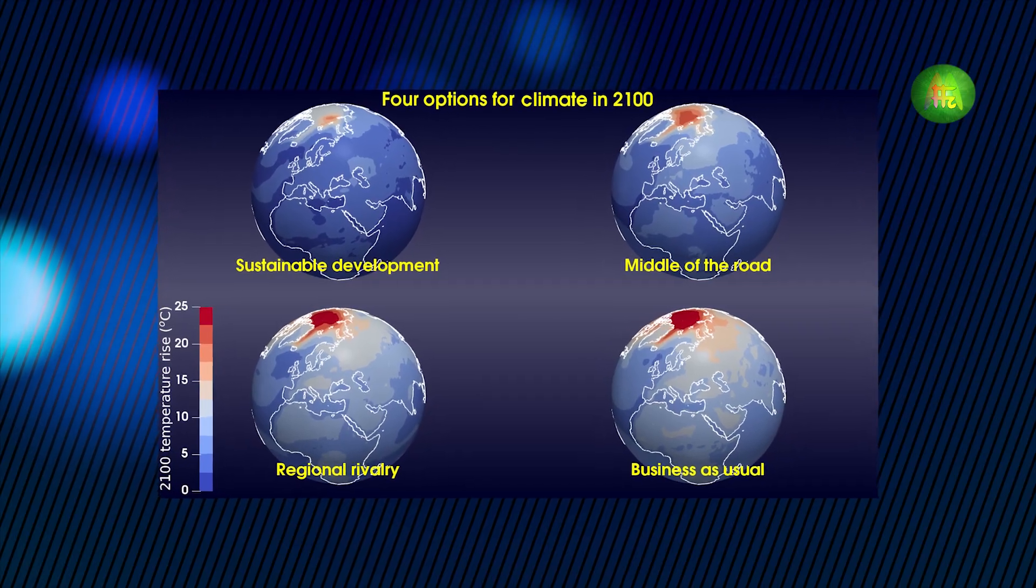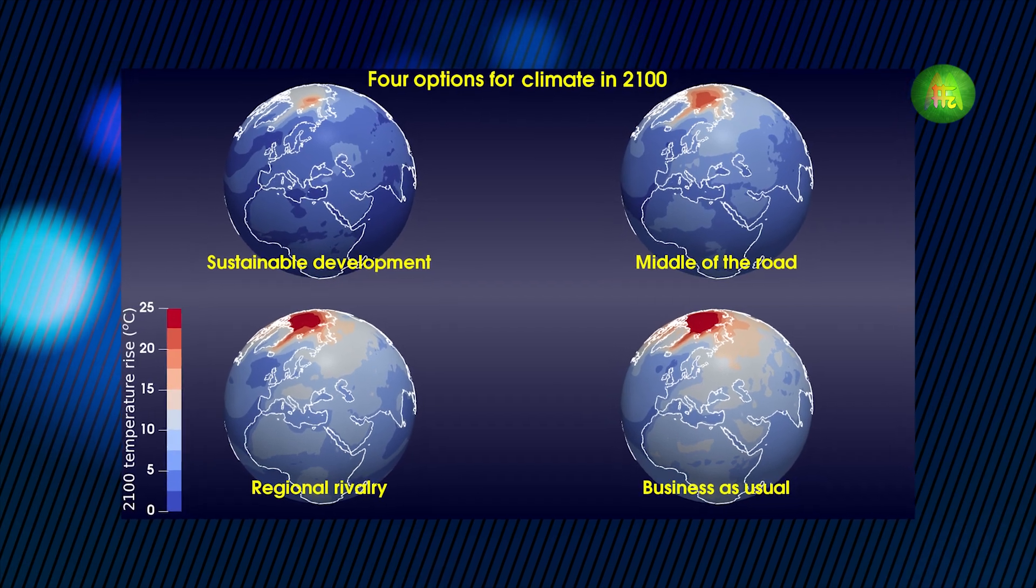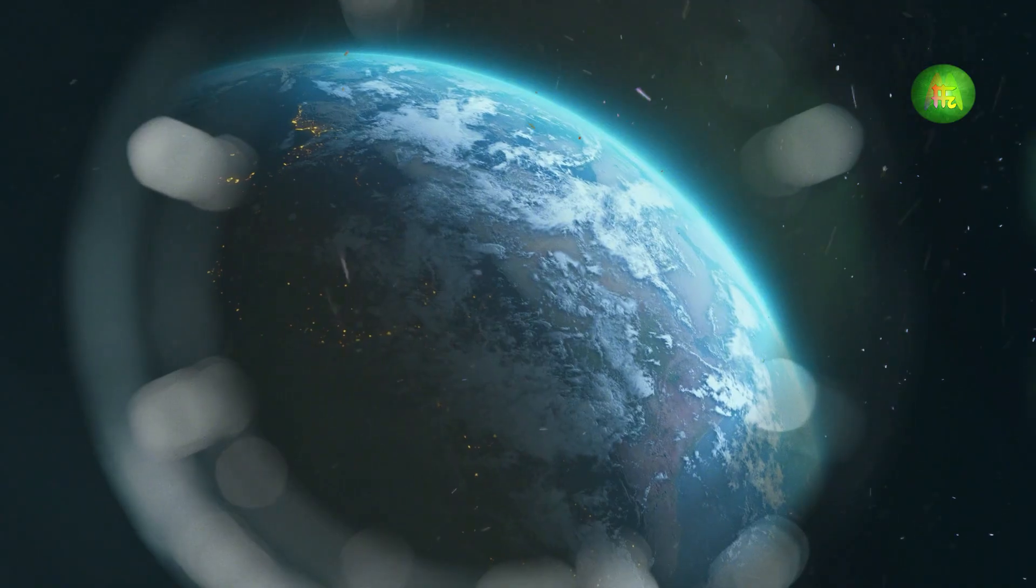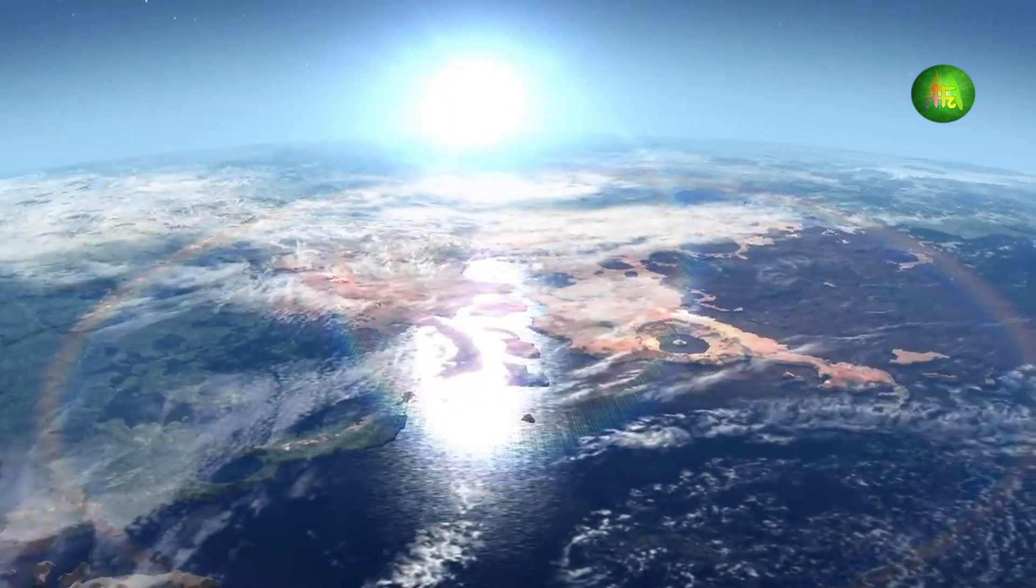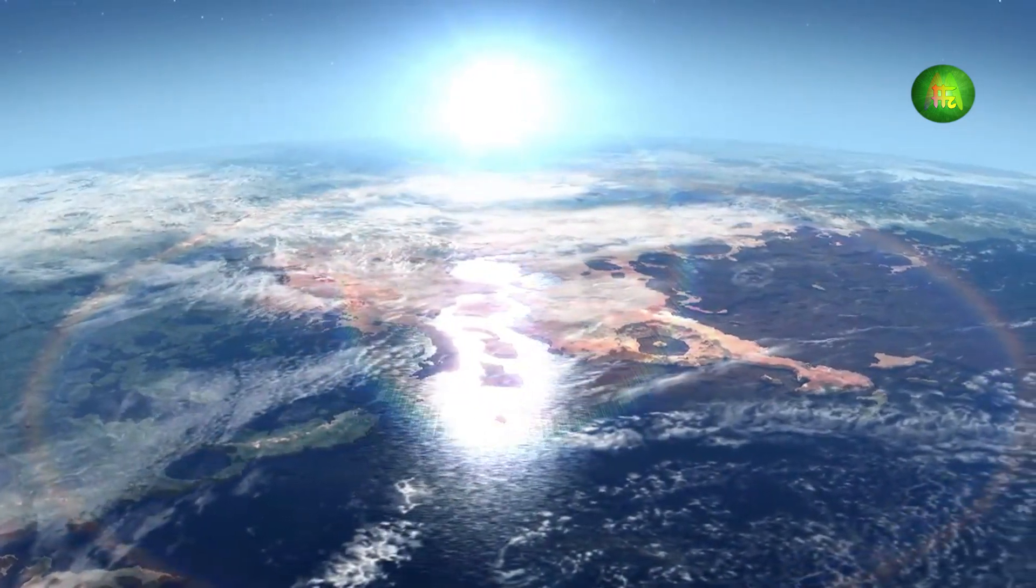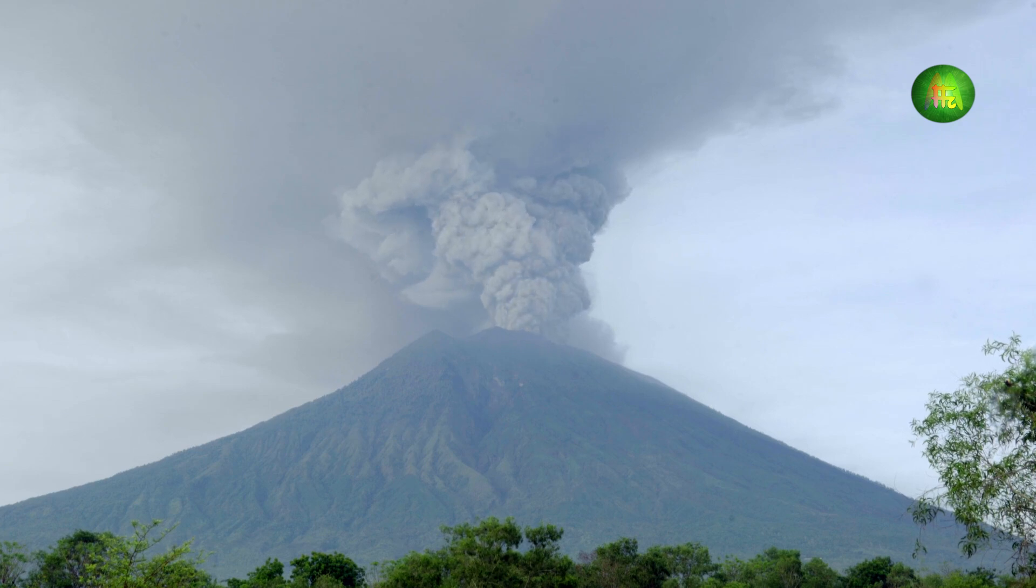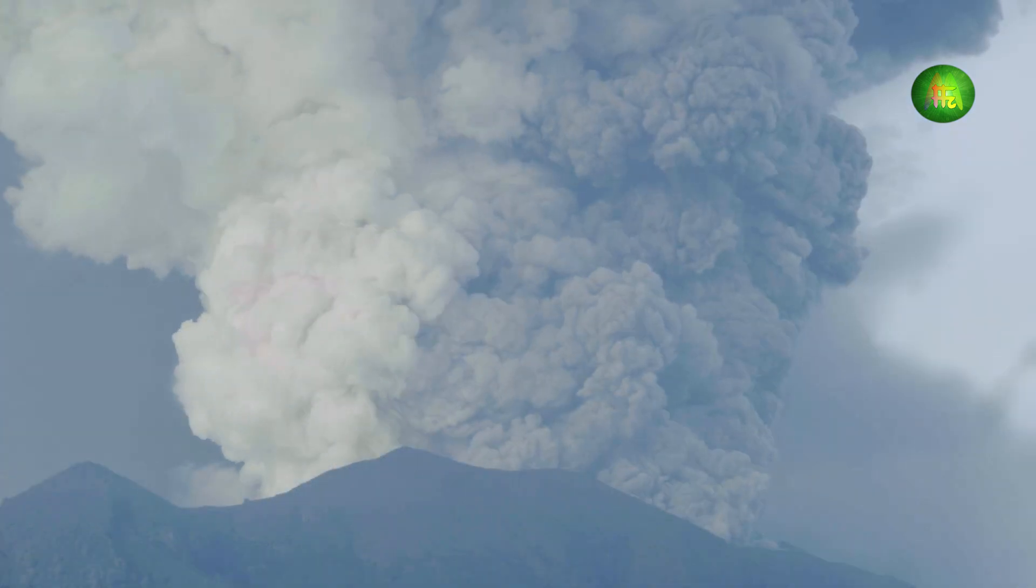3D climate models can be used with diamond dust particles to reflect solar radiation back into space and study the chemical effects of this geoengineering product.